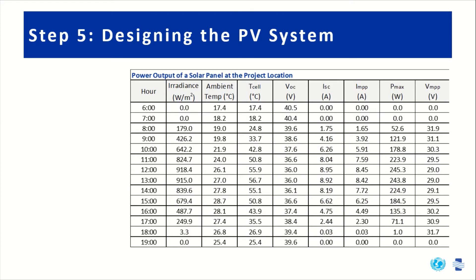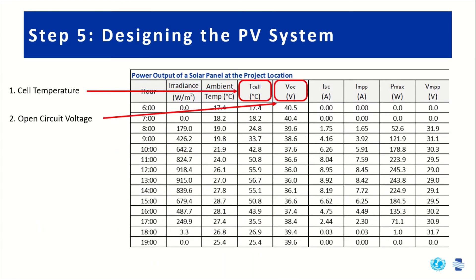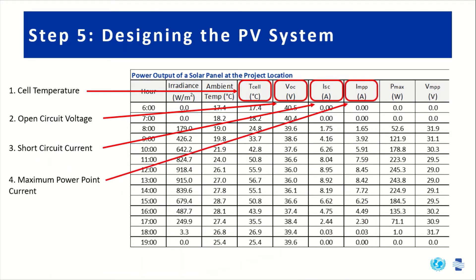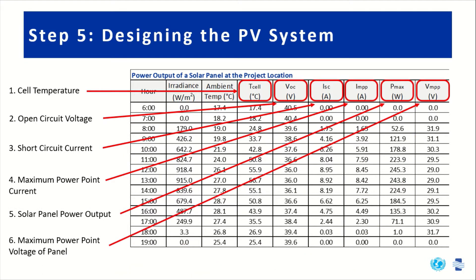Once you've entered that, the solar-powered water system design tool automatically calculates the power output of a single solar panel at the project location. It calculates from irradiance and ambient temperature: the cell temperature, the open circuit voltage, the short circuit current, the maximum power point current, the solar panel power output, and the maximum power point voltage of the panel — all automatically calculated based on your inputs of irradiance, ambient temperature, and the solar panel specifications.